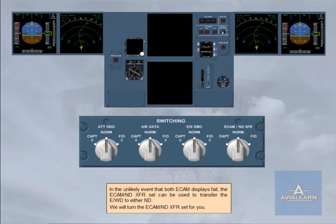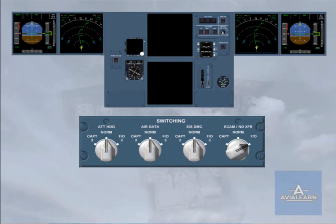In the unlikely event that both ECAM displays fail, the ECAM and E-transfer selector can be used to transfer the engine warning display to either ND. We will turn the ECAM and E-transfer selector for you. As you can see, the first officer now has the engine warning display on his ND screen.